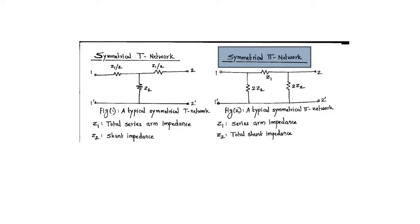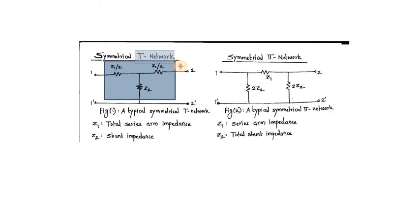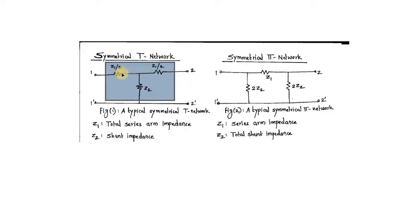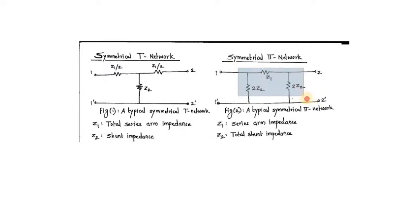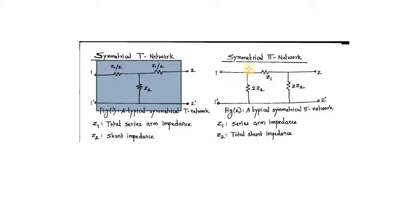A two-port symmetrical T network usually looks like this. We call it a T network because the three elements present in three branches of a given two-port network represent the letter T in the English alphabet. And if we look at the other structure, the elements are arranged in such a manner that the structure is similar to the symbol pi of mathematics. That is why such a symmetrical network is referred to as symmetrical T network or symmetrical pi network.